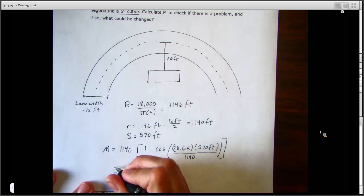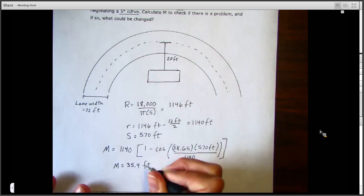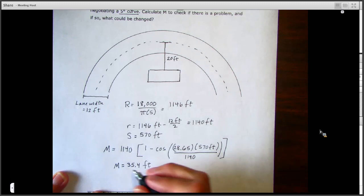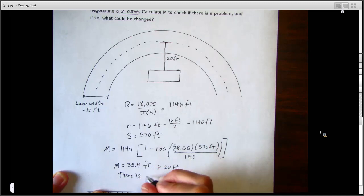And when we plug that all in, you should get a capital M of 35.4 feet. And as you can see, that is greater than the 20-foot distance that we were given, so there is a sight distance problem.